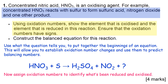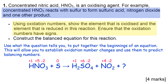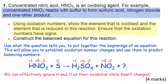The first thing to do is to assign oxidation numbers to identify what elements are involved in the redox aspect of this equation. Now what you do is eliminate all the numbers that don't change - hydrogen for example doesn't change and neither does oxygen. So we ignore those two and we just focus on the nitrogen and the sulfur.